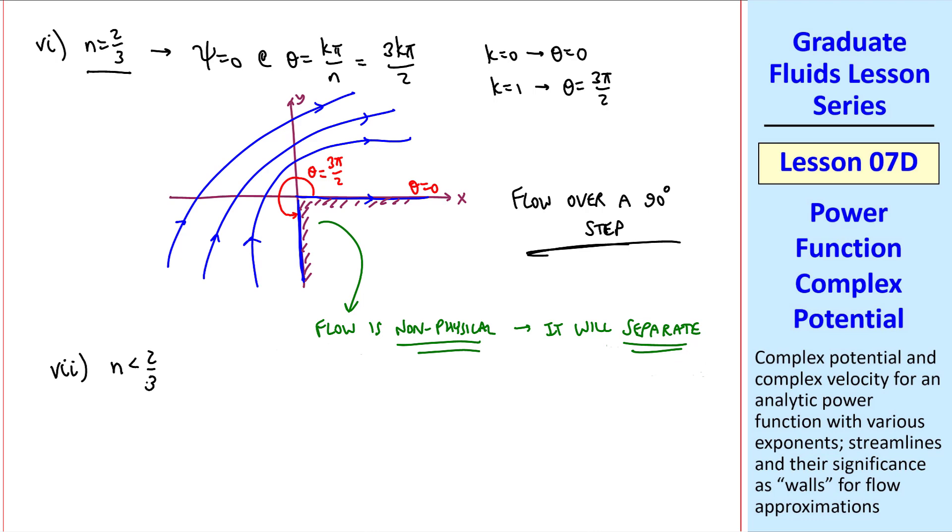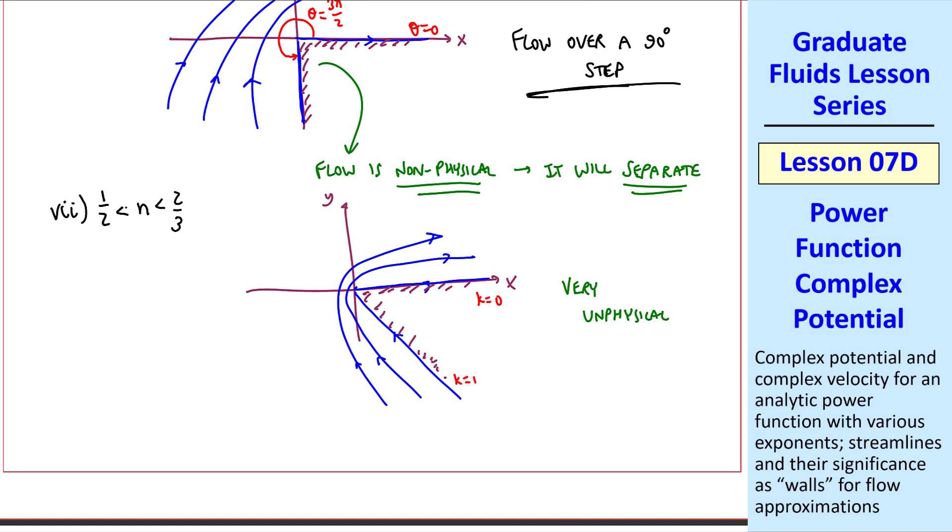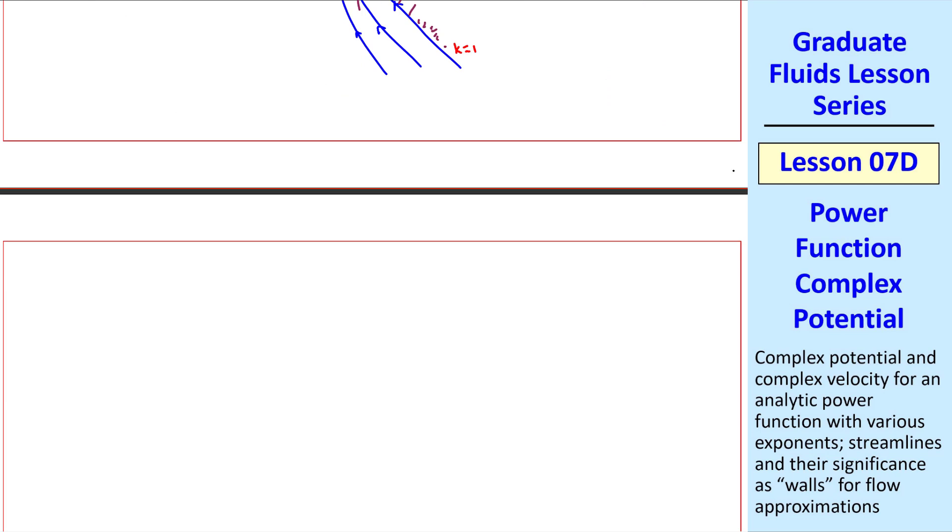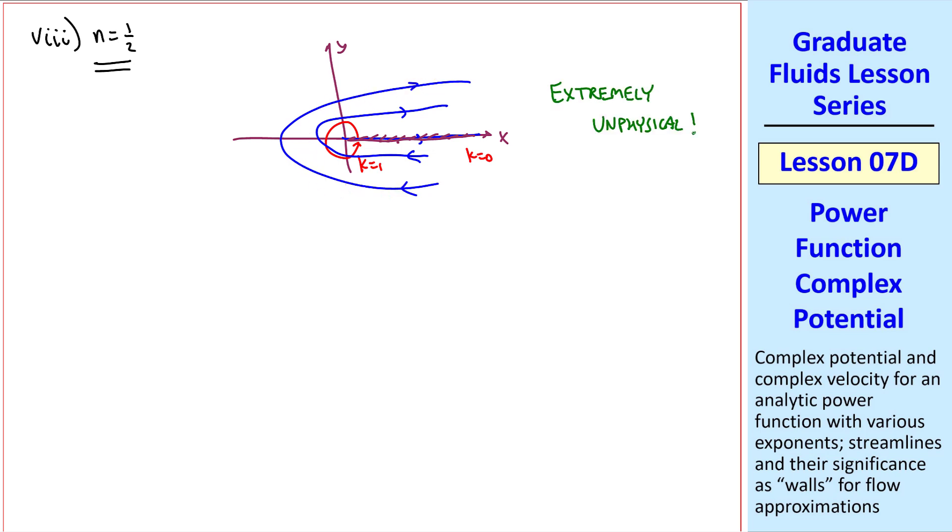Very quickly, if n is less than 2/3, the flow gets even more unphysical, with streamlines that must go around a very sharp corner, something like this, if we let these two streamlines, k equals 0 and k equals 1, be thought of as walls. This flow is very unphysical, since it would separate here at this sharp corner. I'll further restrict this to n greater than 1/2 and less than 2/3, so that we can talk about another case when n equal 1/2. The k equals 0 streamline is again along the x-axis, but the k equals 1 streamline goes around 2 pi when n equal 1/2, and is therefore also along the x-axis. This flow would look something like this, where we can think of the x-axis as a wall, or a flat plate, with flow going entirely around it. As you might imagine, this flow is extremely unphysical.